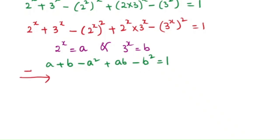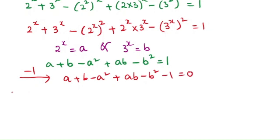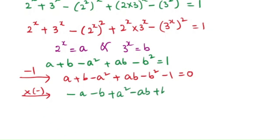Let's subtract 1 from both sides: a + b - a² + ab - b² - 1 = 0. Now multiply through by minus one: -a - b + a² - ab + b² + 1 = 0.